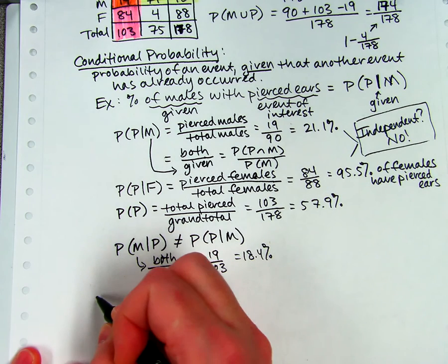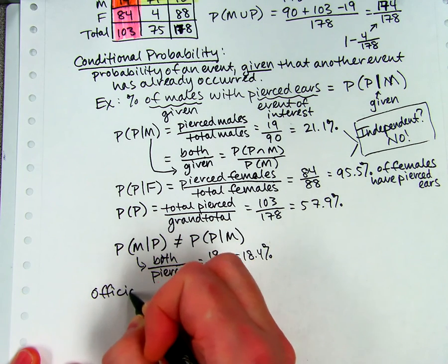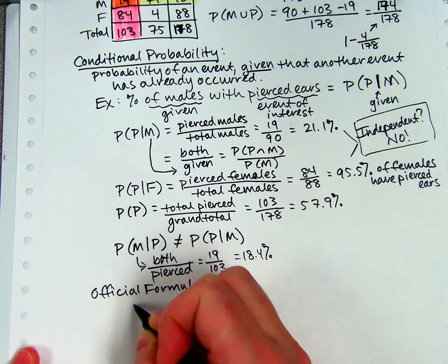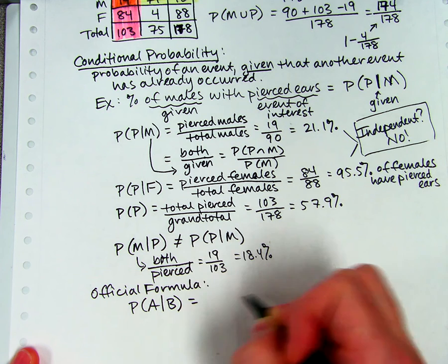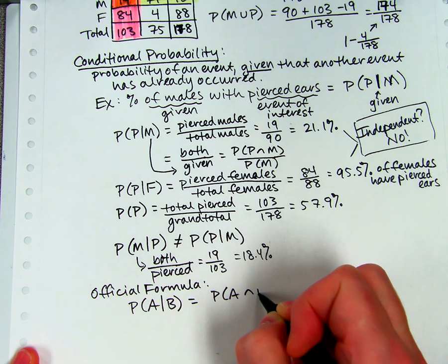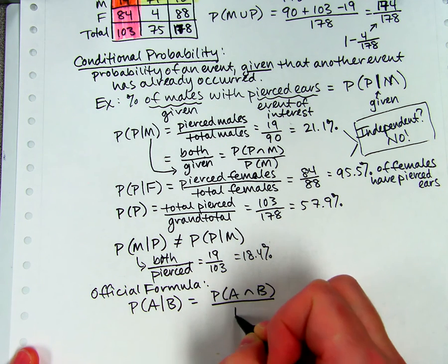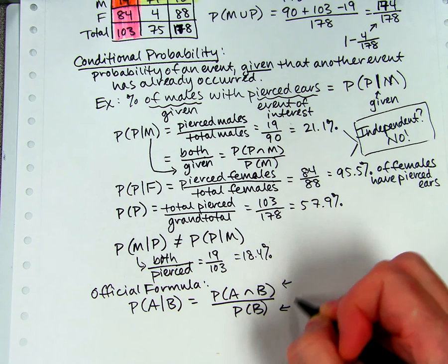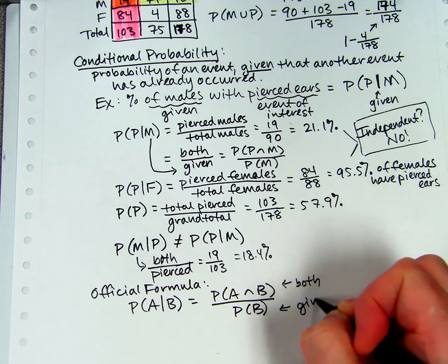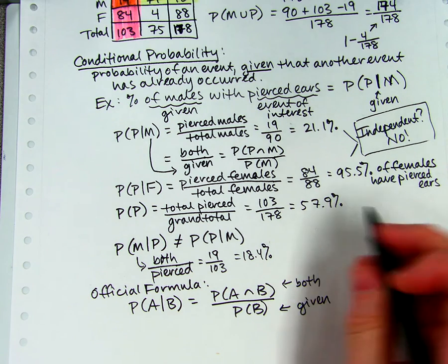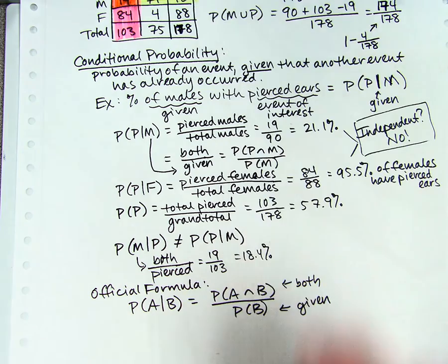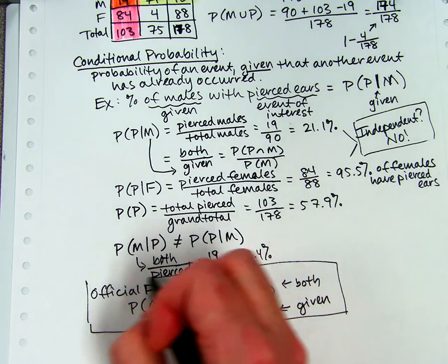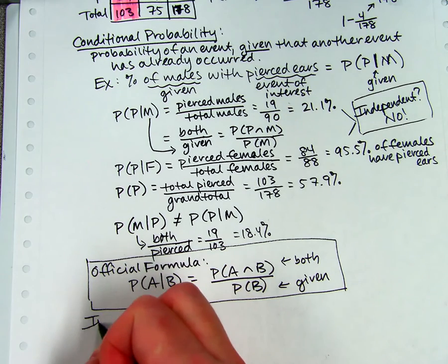There's two more things in this set of notes. One is the official formula for this, which I actually gave you up here, but I'll put it down here so we can put a box around it. The official formula is the probability of A given B is the probability of A and B divided by the probability of B. That's the definition of conditional probability. And the way to remember it is both over given. But more important than the formula is can you find those numbers on the table? Can you figure out which one to divide by based on what you're trying to find out? So that's the official formula definition of conditional probability.